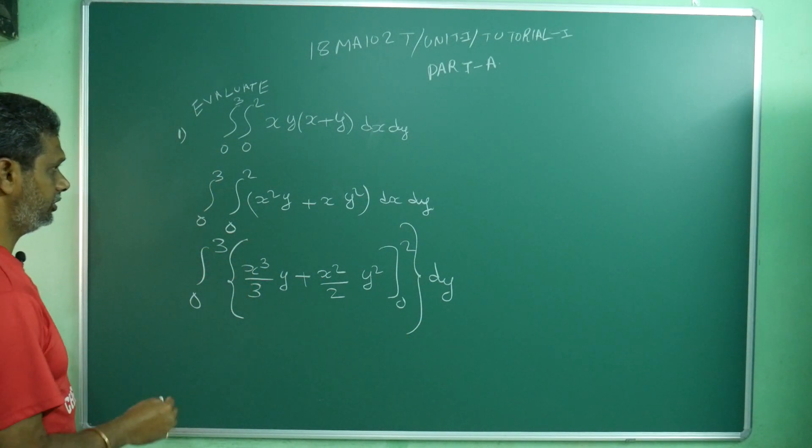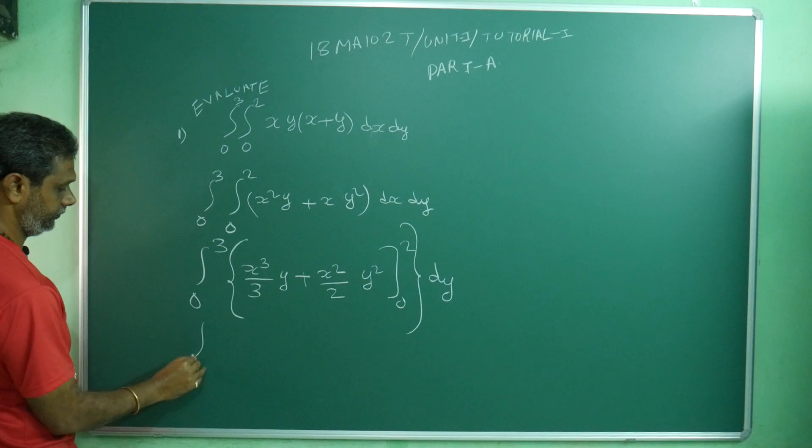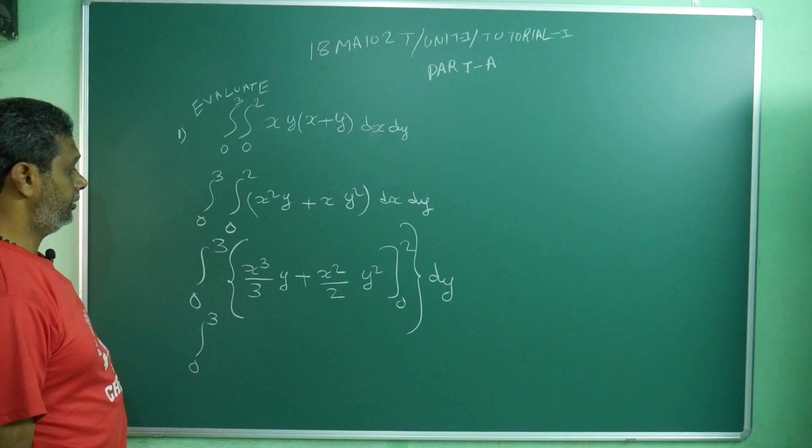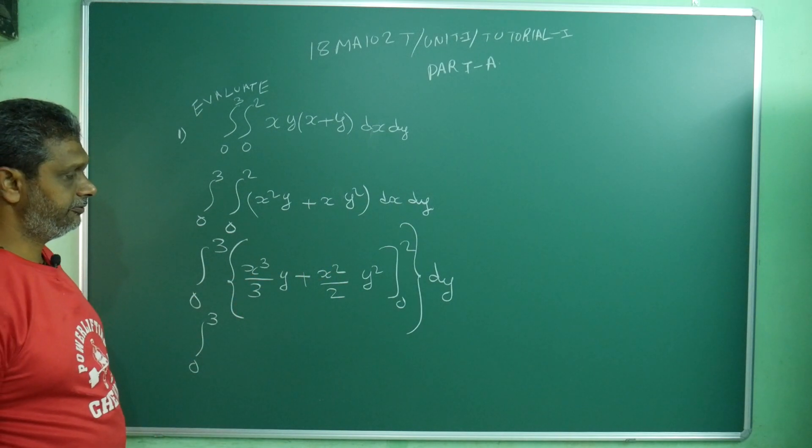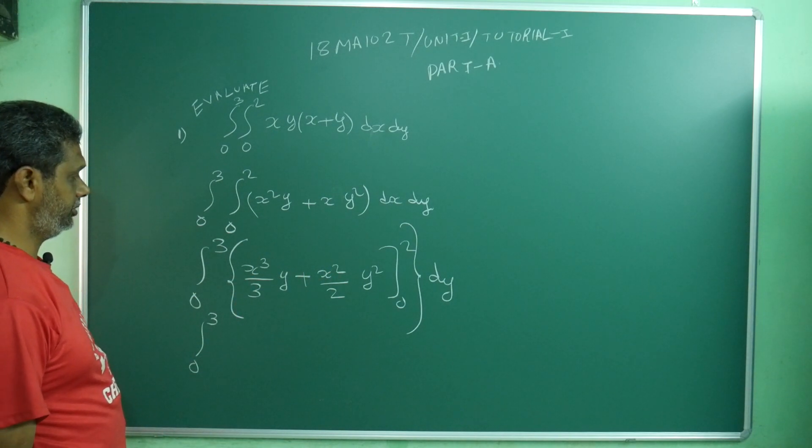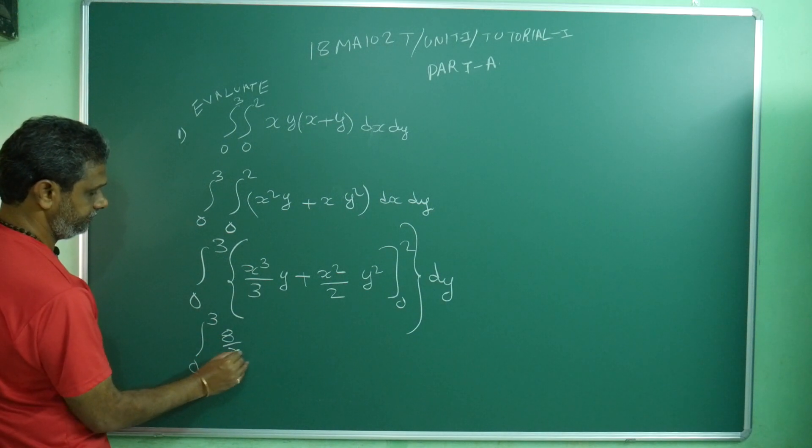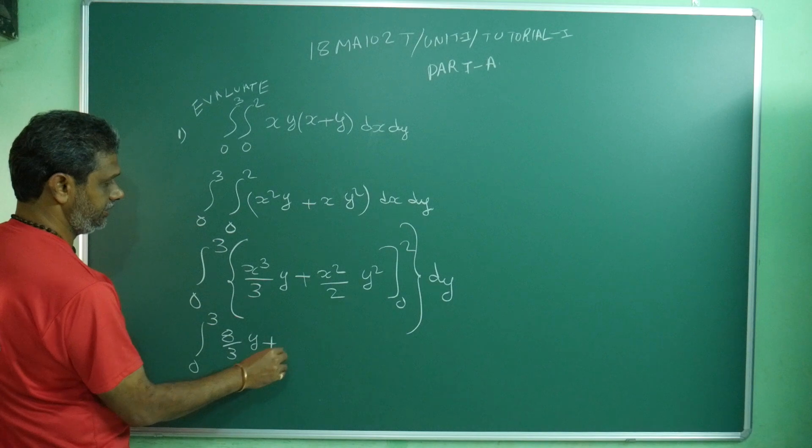Now apply limits. What you will get? 0 to 3, then apply upper limit, lower limit. Anyway it becomes vanish, waste. Take upper limit: 2 cubed by 3, that is 8 by 3 y plus...